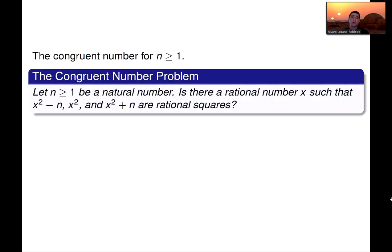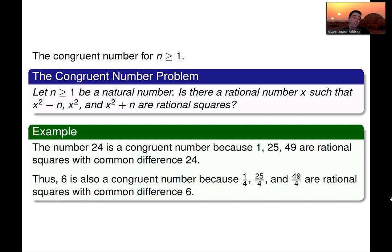So in more modern terminology, given a natural number n, is there a rational number x such that x squared minus n and x squared plus n are all rational squares. So that would make n a congruent number, if that is true. For example, 24 is a congruent number, because 1, 25, and 49 are rational squares with common difference 24. If you divide all of those by 4, then you get 3 squares, such that their difference now is 6. So 6 is also a congruent number.